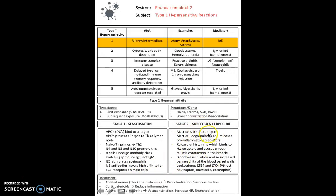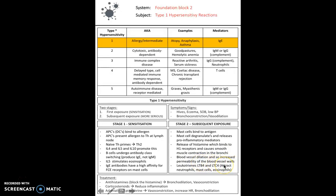Next time you're exposed to that allergen it's much more serious because you've already got IgE antibodies bound to mast cells. When the allergen enters the body it binds to the mast cells and the IgE antibody. The mast cell then degranulates and releases pro-inflammatory mediators, an example of which is histamine. Histamine binds to H1 receptors causing smooth muscle contraction in the bronchi, producing bronchoconstriction, and also blood vessel dilation via release of nitrous oxide — a potent vasodilator — increasing permeability and causing edema.